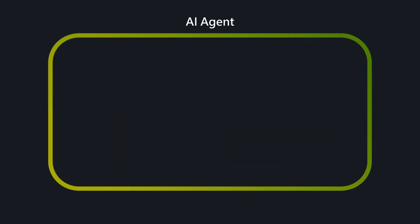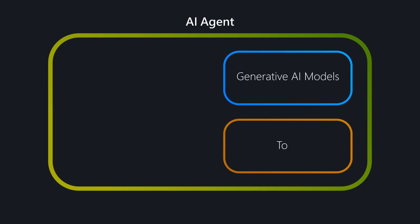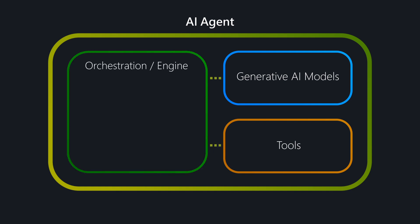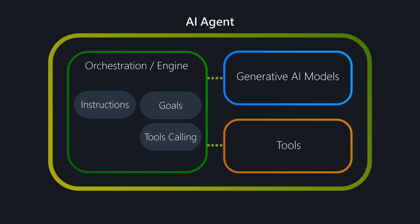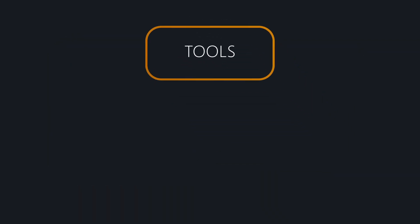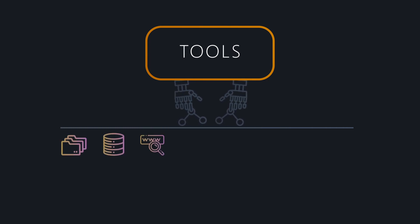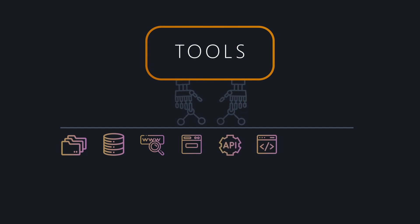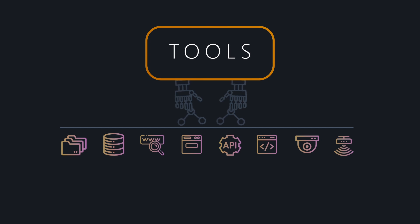So how do modern agents work? At its core, an AI agent allows generative AI models to interact with external tools. This interaction is achieved by an orchestration engine component that manages the agent's instructions and goals, tool calling, and optionally gives it access to short and long-term memory. These tools allow the agent to interact with their environment — for example, they can read and write data from files or databases, search the web or interact with online forms, call APIs, access codebases to generate or update software, and communicate with physical devices like cameras, smart sensors, or other hardware.